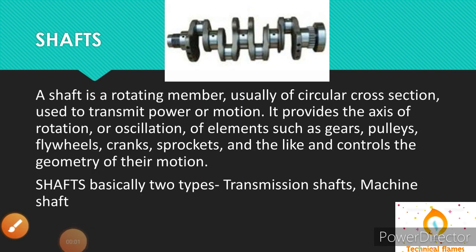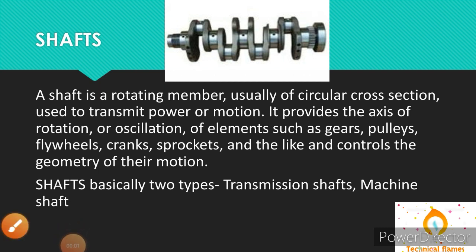So first of all, let's discuss about shaft. Basically, a shaft is a rotating beam, usually of circular cross-section, used to transmit power and motion. It provides the axis of rotation or oscillation of elements such as gears, pulleys, flywheels, cranks, sprockets, and various other types of components. It supports different types of elements and supervises the axis of rotation, and controls the geometry of the motion.